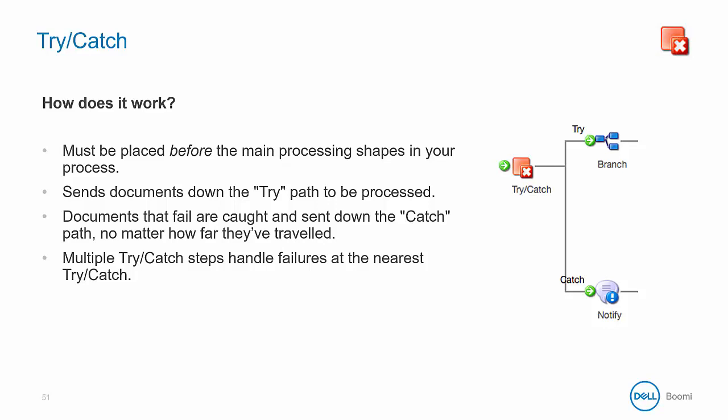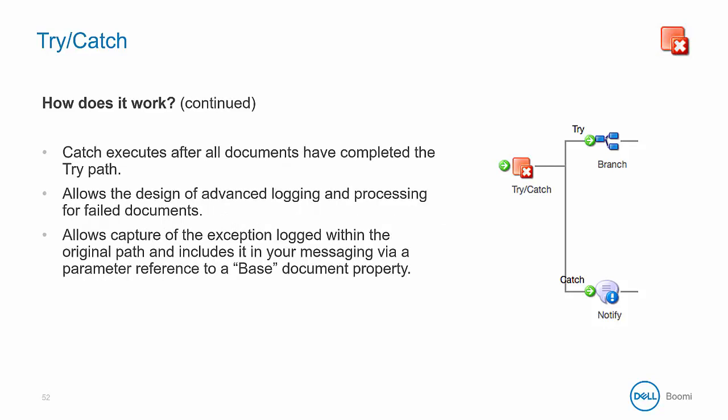If you use multiple try-catch steps, the nearest try-catch step handles the failure. The catch path executes only after all documents have completed the try path. This is the way that documents flow in Boomi — each path is completed sequentially before the next path can begin. This allows the design of advanced logging and processing for failed documents. You can send alerts or file away the data or documents that have failed, and it allows you to capture the exception logged within the original try.